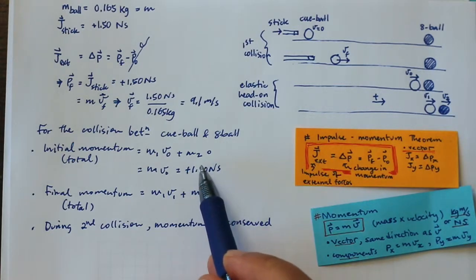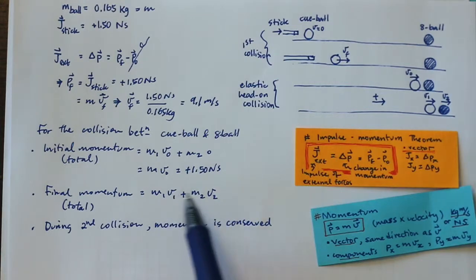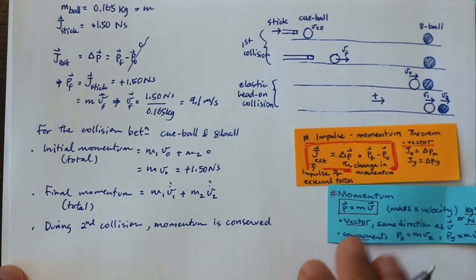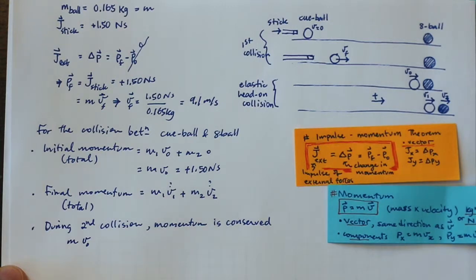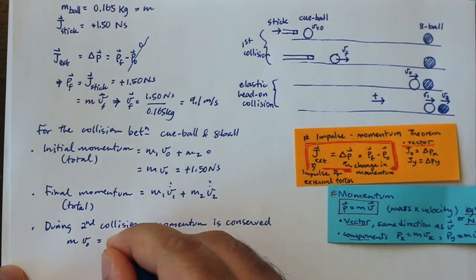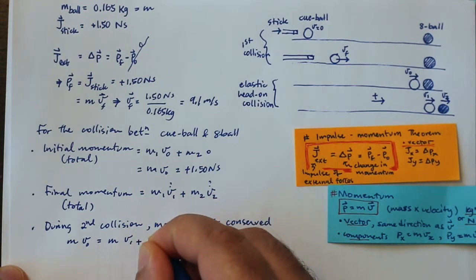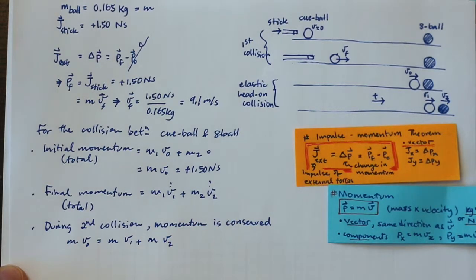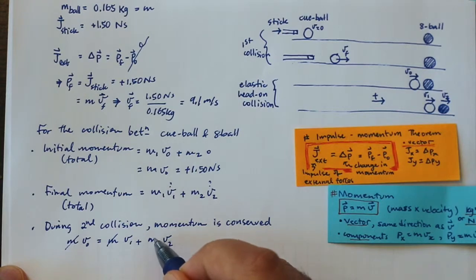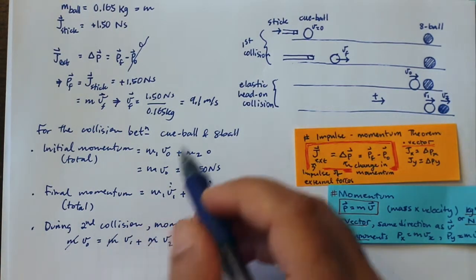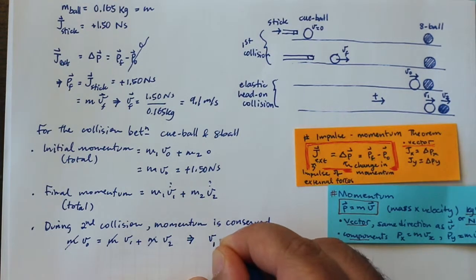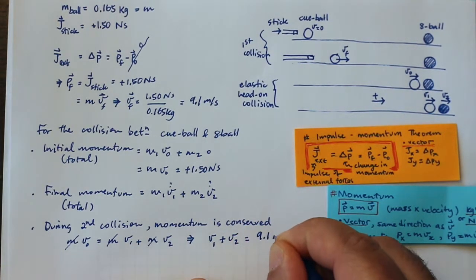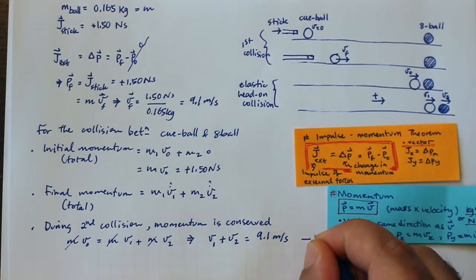I know the initial momentum and the masses of both balls; what I'm missing are the velocities. Writing the conservation of momentum statement: the mass of the cue ball times its initial velocity equals the mass of the cue ball times V1 plus the mass of the eight ball times V2. The masses cancel out since they're equal. Knowing the initial velocity is 9.1 m/s, I get equation one: V1 + V2 = 9.1 meters per second.